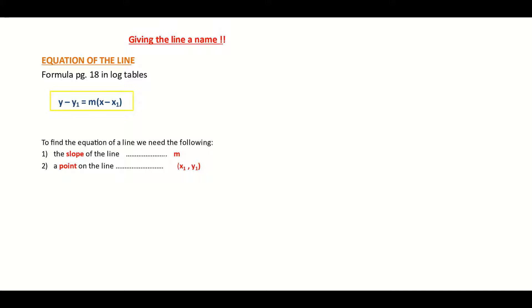The equation of the line is basically just giving a line a name. We're giving the line a name, the equation of the line, which will allow us then to sketch it and to write down information about the line, like its slope or where it crosses the y-axis.